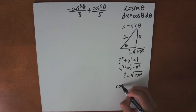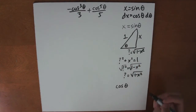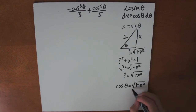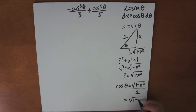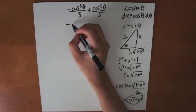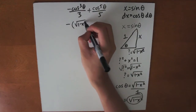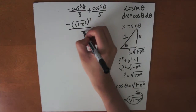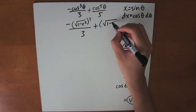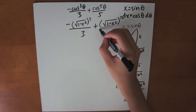So now cosine of theta equals adjacent over hypotenuse. The adjacent side is the square root of 1 minus x squared, and the hypotenuse is 1. So cosine theta equals the square root of 1 minus x squared. Plugging this in, we get minus the square root of 1 minus x squared to the third power divided by 3, plus the square root of 1 minus x squared to the fifth power over 5. And that's our final answer.